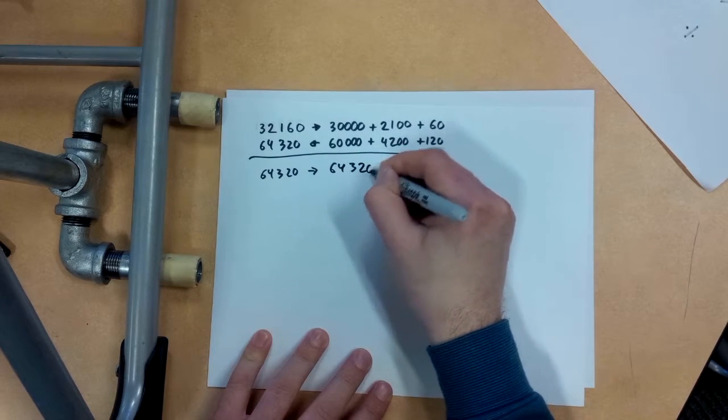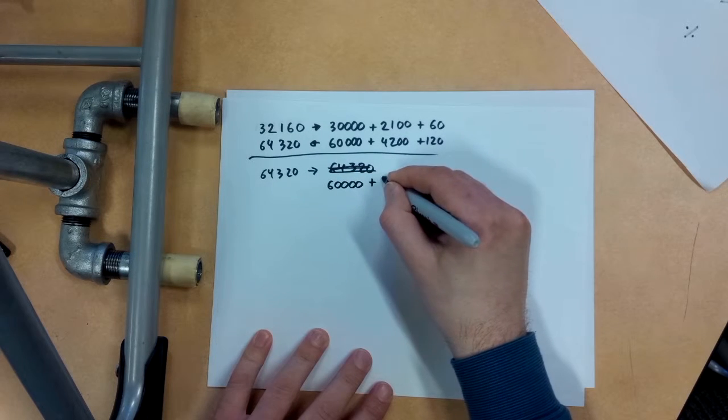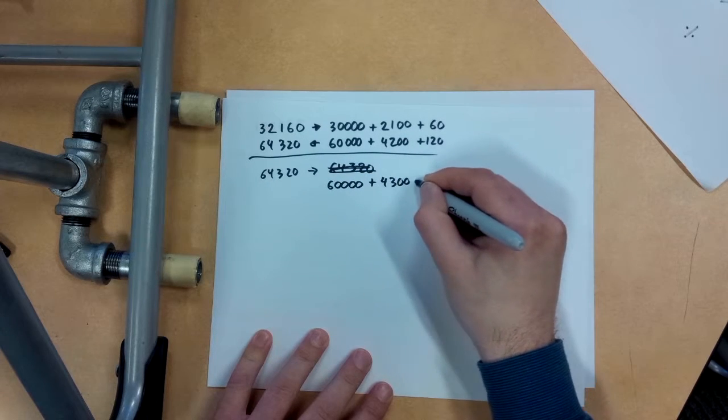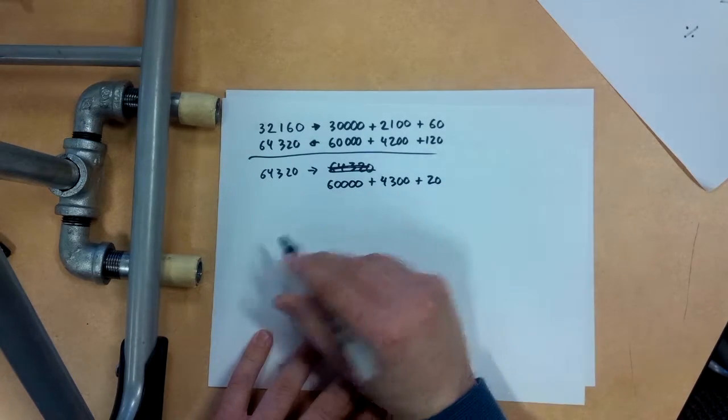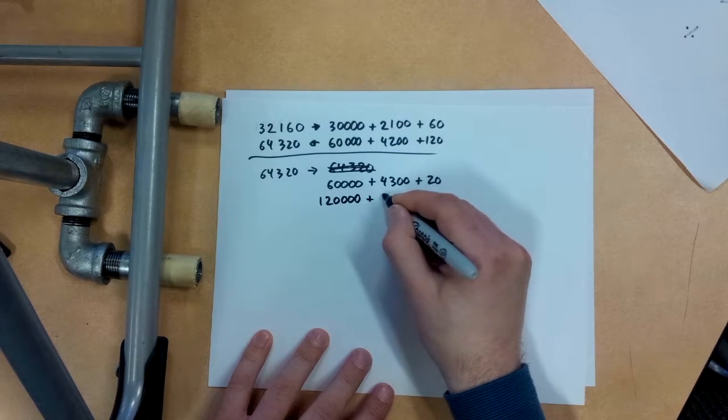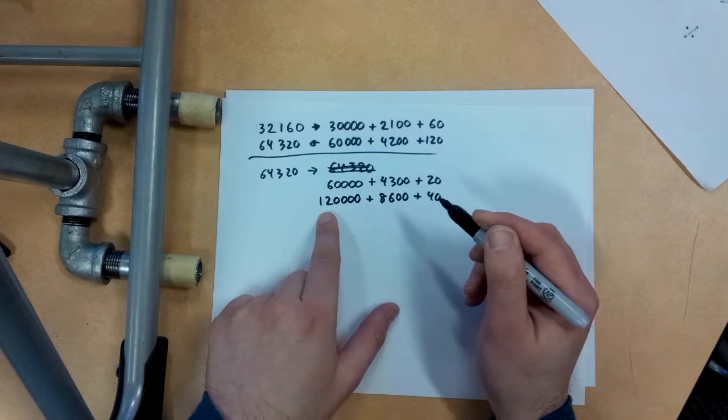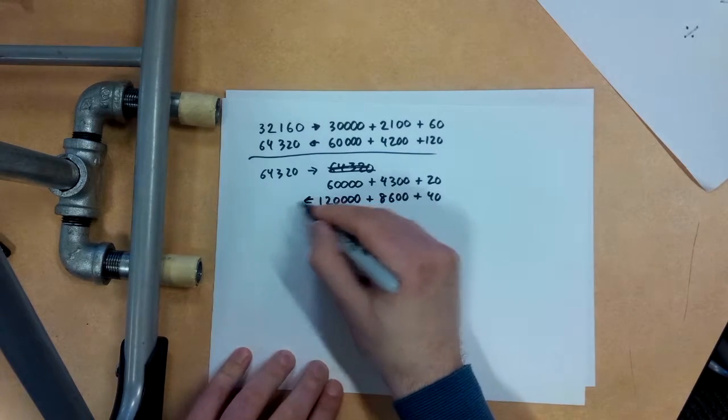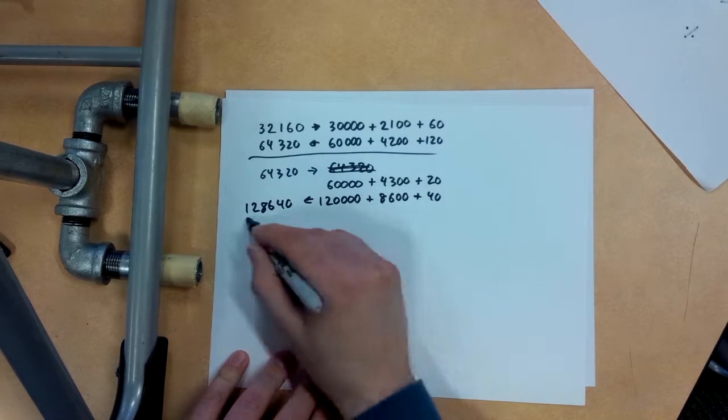Take that apart again. 64,320. So I'm going to have double that. I'm going to get 120,000 plus 8,600 plus 40. So 128,640 is going to be the answer.